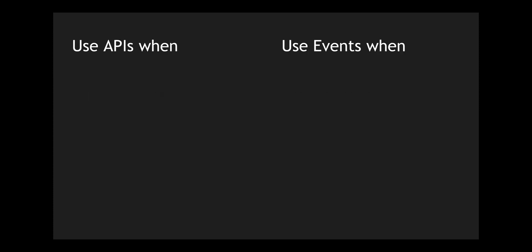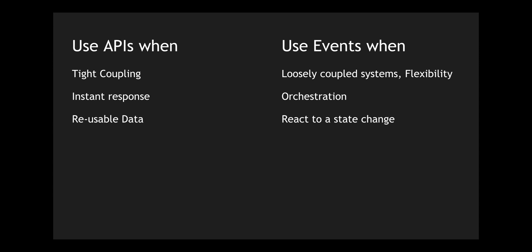Use APIs when you want tight coupling between consuming and producing systems, ensuring you know who the consumers and producers are. Use APIs when you need an instant response when querying data, and when you want to reuse data without duplicating it in another system. Use events when you want a loosely coupled system with flexibility in terms of how many consumers there are and what protocol they use. Also use events when you want an orchestration-based microservices pattern, or when there is a state change you want to capture and react to for further processing.